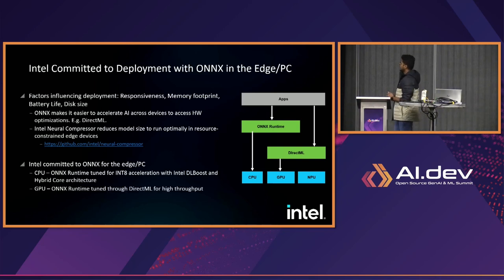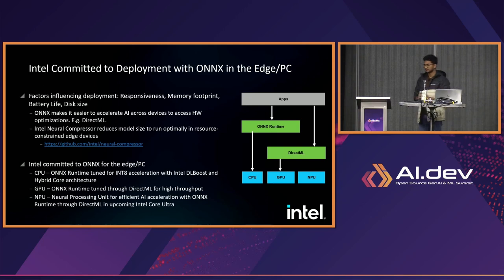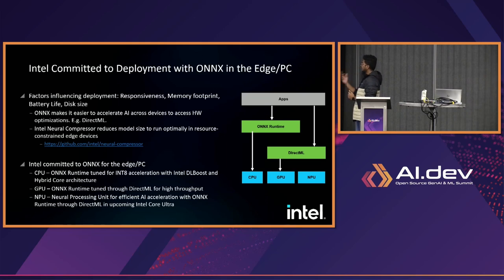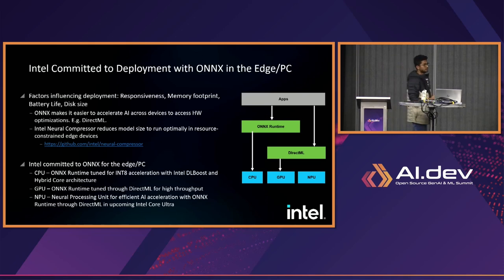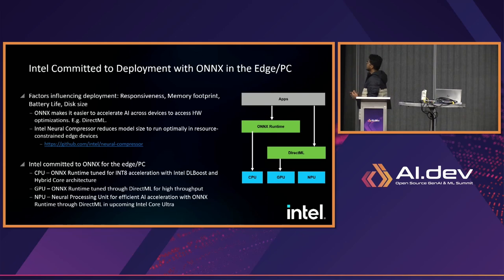On the GPU side, Intel has fine-tuned DirectML for higher throughput when running models through DirectML. Our latest work is on the Intel NPU — the Neural Processing Unit. In the upcoming Intel Core Ultra, we are able to run DirectML through the NPU. The NPU is a high-performance, low-power accelerator, so you can run models using less power than you would on a GPU, while still seeing the performance benefits of Intel NPU acceleration.